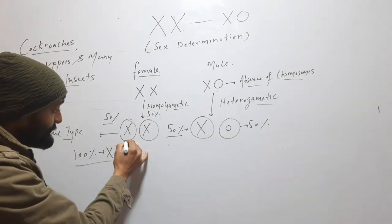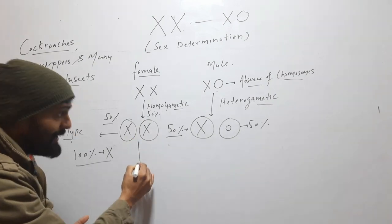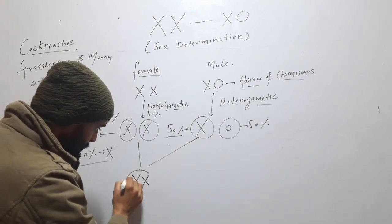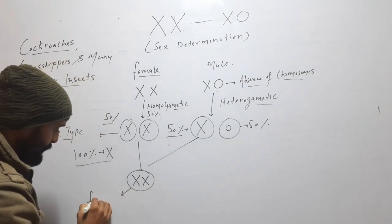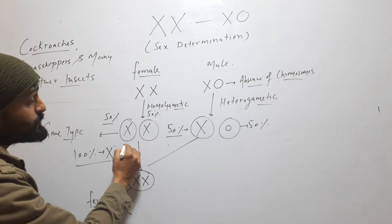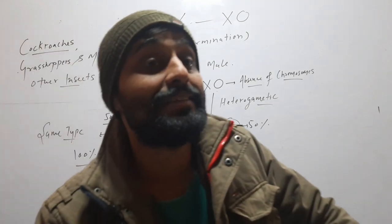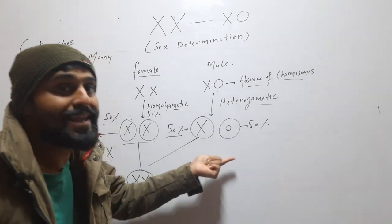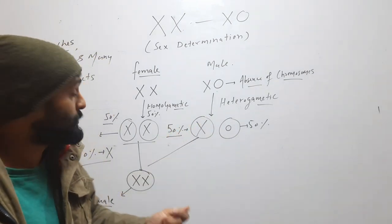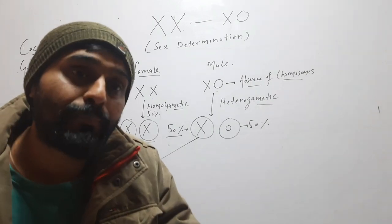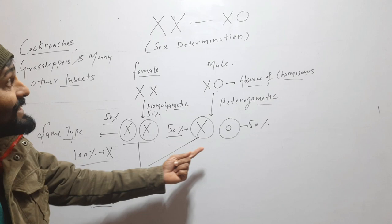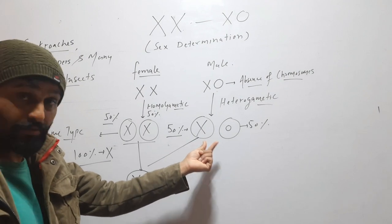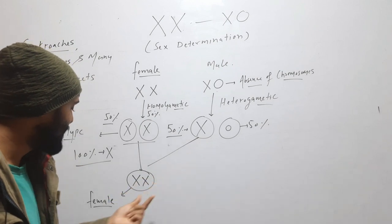So when X from the female fuses with X from the male, it will produce a female. The female always produces gametes with X. So who is deciding the sex of the organism? The gamete of the male is deciding the sex, because the female is always producing X chromosomes. But in case of male, 50% are X and 50% are without X. So when X chromosome comes from male, it will be female.